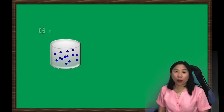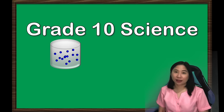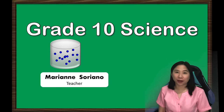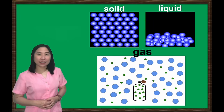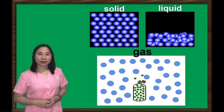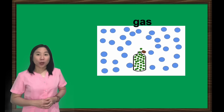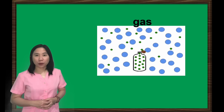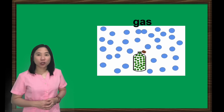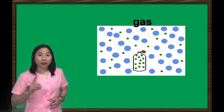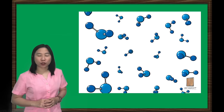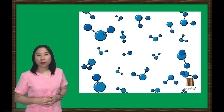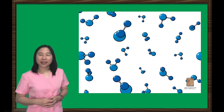Hello, students! Welcome to Grade 10 Science Lesson, and I'm your teacher, Mom Marian Soriano. You've learned in Grade 8 that like solids and liquids, gases are also made up of molecules. The properties of gases can be attributed to the random and scattered arrangement of its molecules. This is because gases have very weak intermolecular force of attraction. Let us learn more about the behavior of gases in today's lesson.